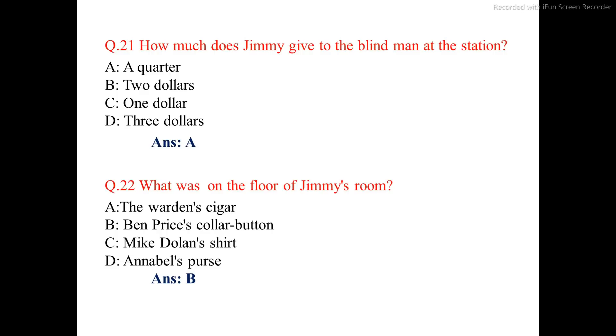Question number 22. What was on the floor of J.B. Shaw? The correct answer is option B: Bain Price's collar button.